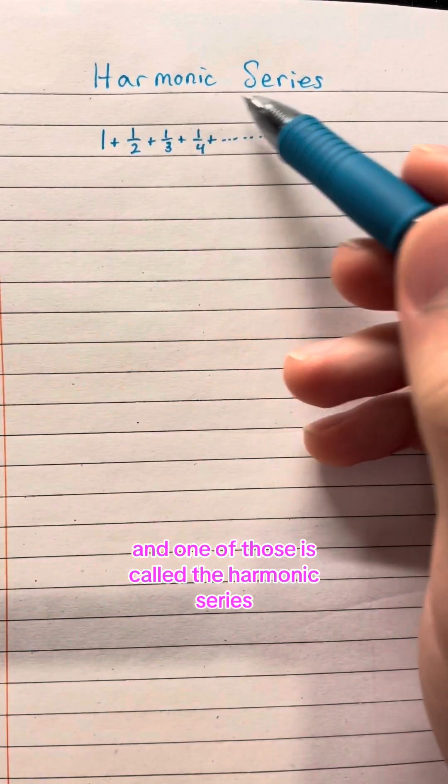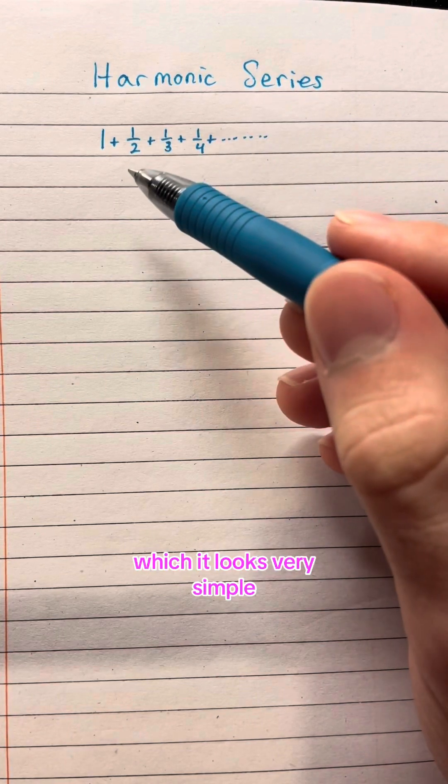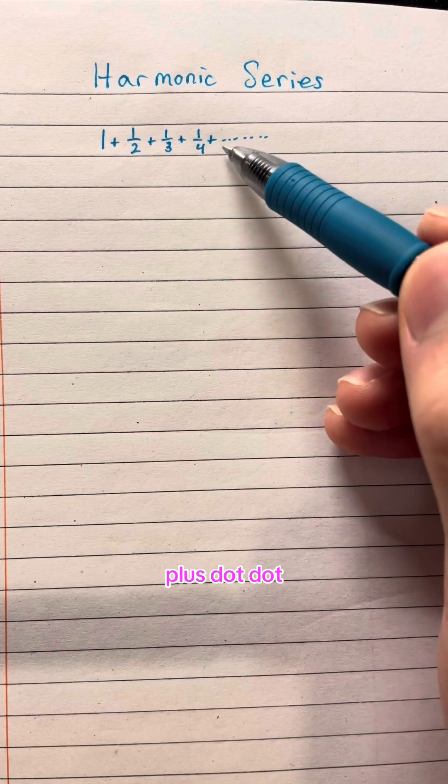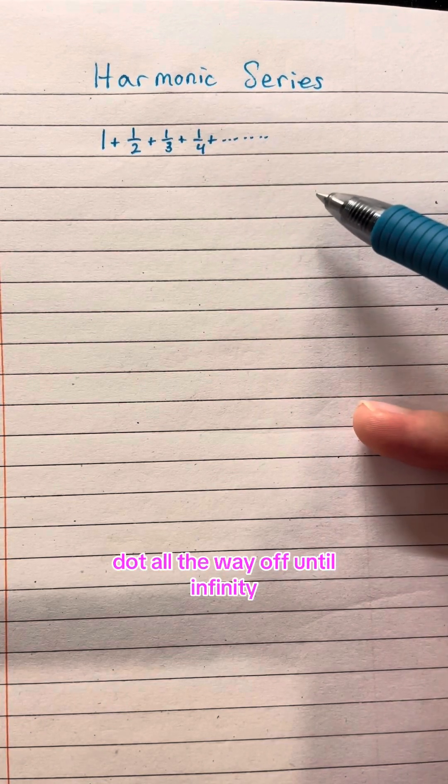And one of those is called the harmonic series, which looks very simple. It's just one plus a half plus a third plus a fourth plus dot dot dot all the way off until infinity.